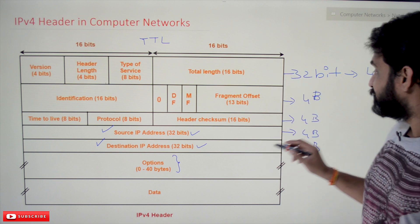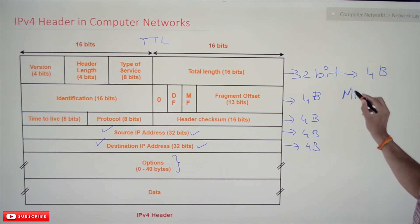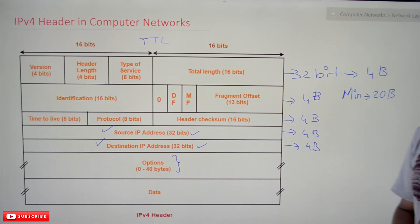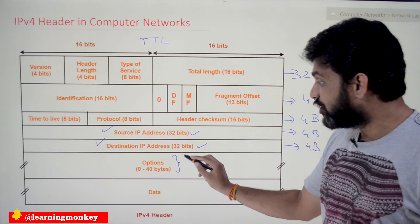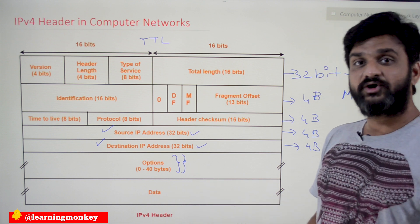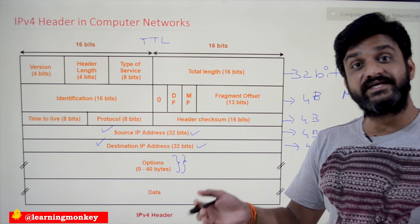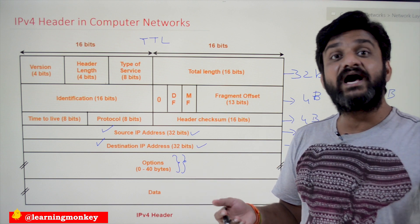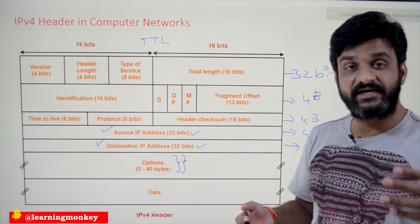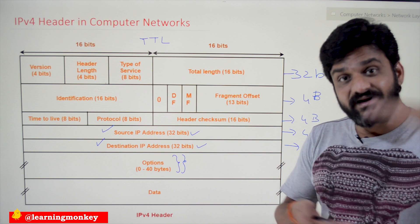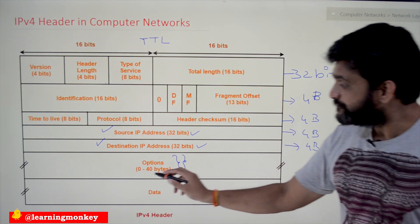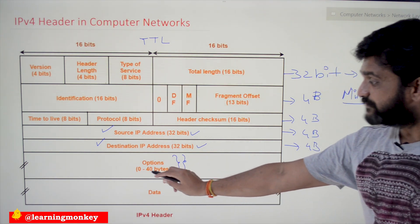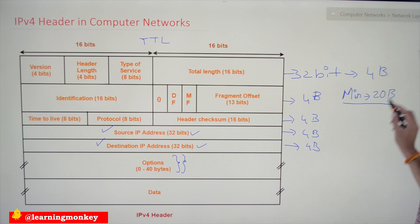These mandatory fields are not optional — they must always be present. So the minimum length of the IPv4 header is 20 bytes. The size of the IPv4 header is variable because of the options field, which may or may not be present. So the header length varies from one IPv4 packet to another. The minimum length is 20 bytes.